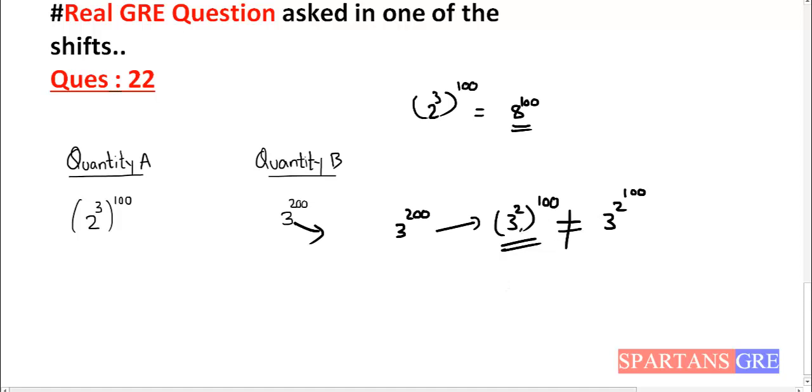This two, this will be like A power B whole power C. This will be A power BC. Whereas if you have A power B power C, this will not be equal to A power BC. Right? So this is the algebraic form. Now this can be written as 3 square whole power 100. 3 square means 9, 9 power 100. So quantity B will be greater than quantity A.